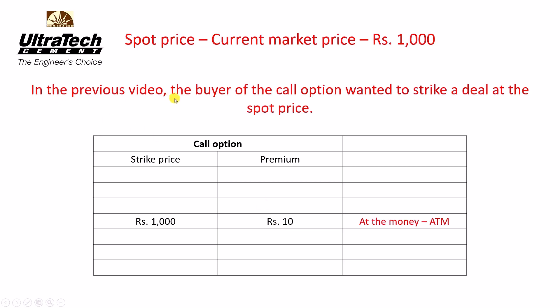In the previous video, the buyer of the call option wanted to strike a deal at the spot price. The spot price is the current market price of the underlying asset. The underlying asset here is Ultratech Cement stock. What else can be the underlying asset? It can be indices, it can be a commodity, or it can be a currency. The buyer wanted to strike a deal at ₹1000 — that becomes the strike price.